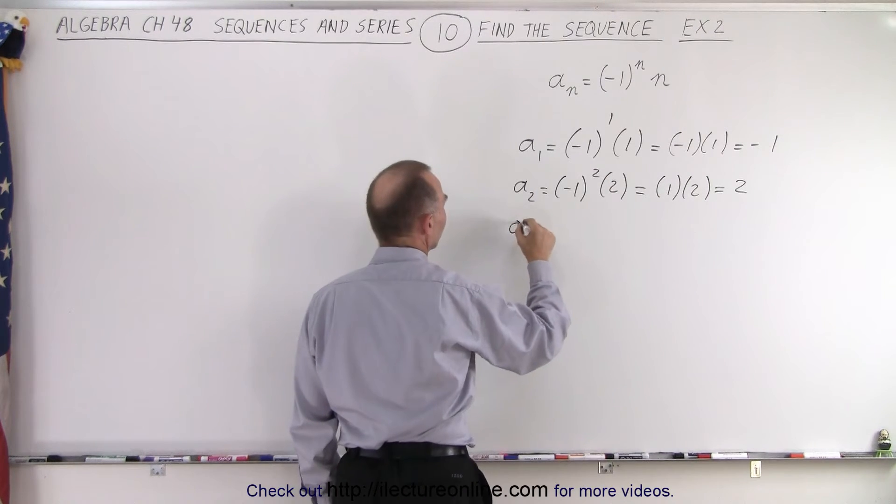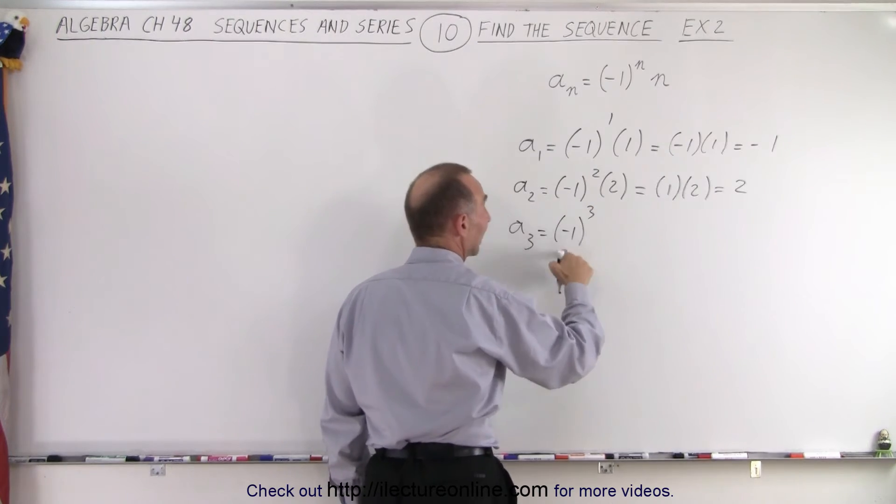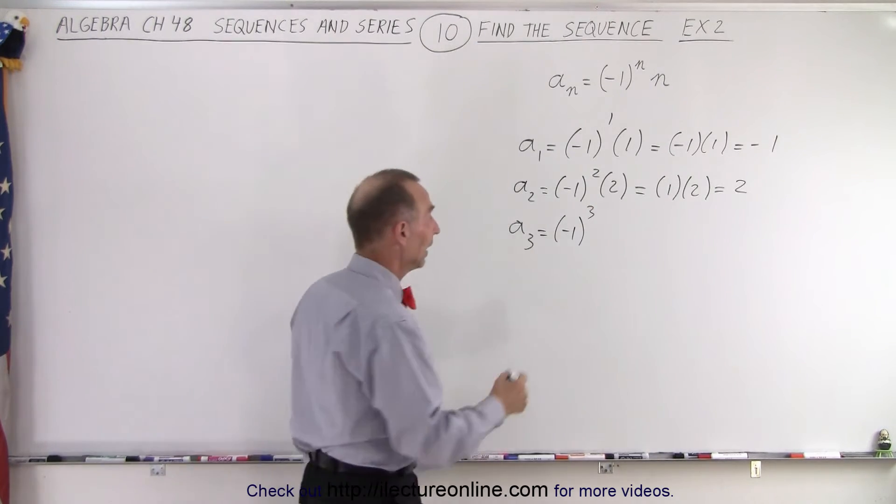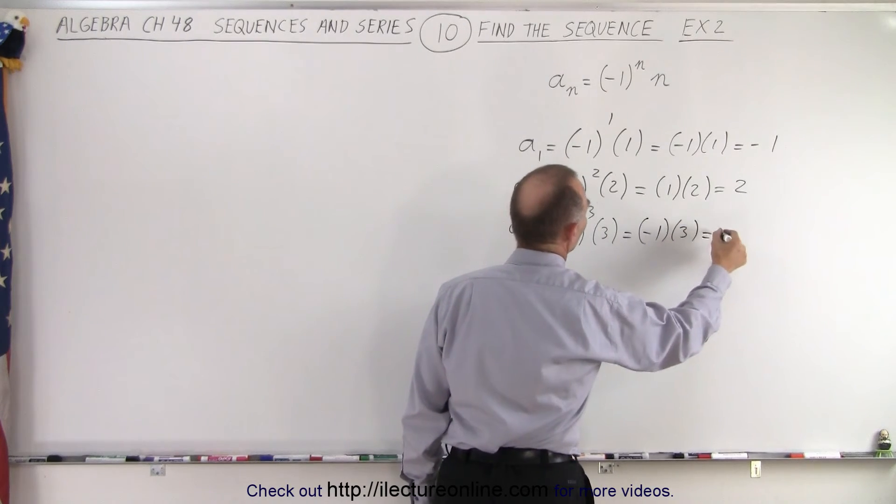And we find the third term, so this is negative one to the third power. Now notice again that will become a negative one, and we multiply times three, which is negative one times three, which is negative three.